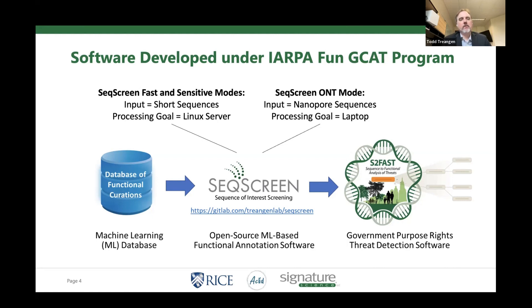This slide talks about running in fast and sensitive mode — say you want to run it on many, many sequences, or even on a set of metagenomic reads, which can be a very large data set. You're obviously going to want a well-equipped server and maybe a computational cluster. And then we have this new mode: there's a preprint now available that describes SeekScreen ONT mode, SeekScreen Nano.